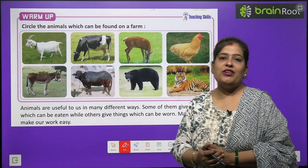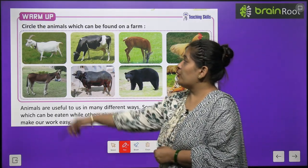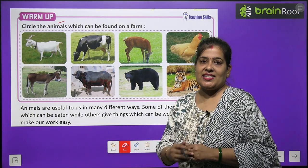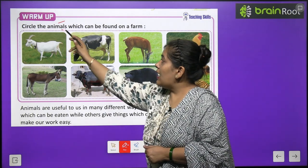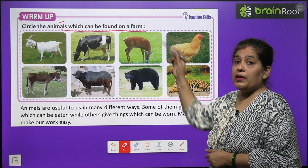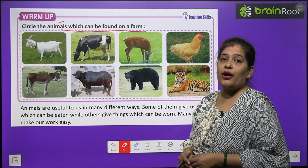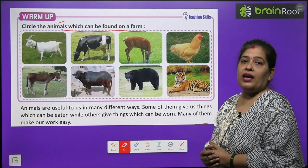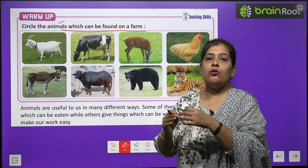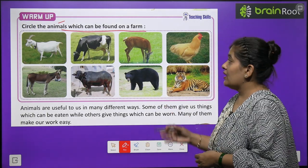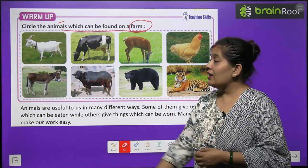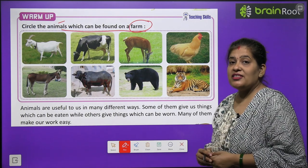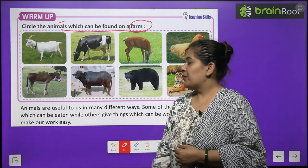Before we start the chapter, we will do a warm-up. Hum ek warm-up exercise kareenge. Circle the animals which can be found on a farm. Yaha pe kuch animals ki picture di hoi hai. Aap ko un animals ko circle karna hai jo kahan milte hai? Farm par milte hai. To ye activity aap khud kareenge.